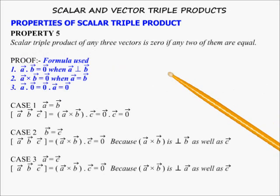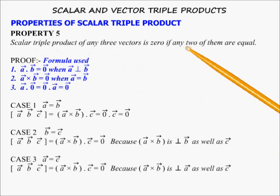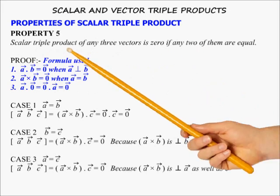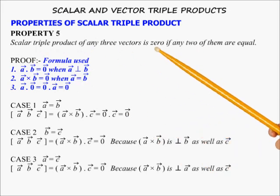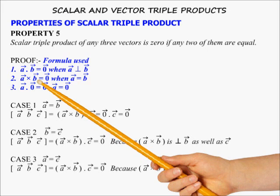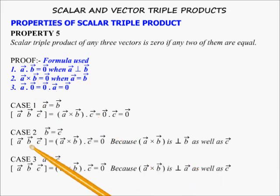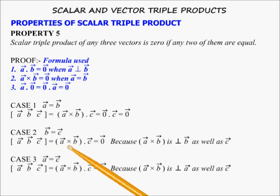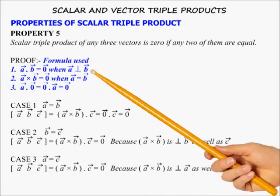Property 5: If any two vectors of the triple product are the same, then the scalar triple product is 0. This is because the cross product of any two equal vectors is 0. Also, if two vectors are equal, the cross product of the unequal vectors is perpendicular to the vector with which the dot operation is performed, and the dot product of two perpendicular vectors is 0.